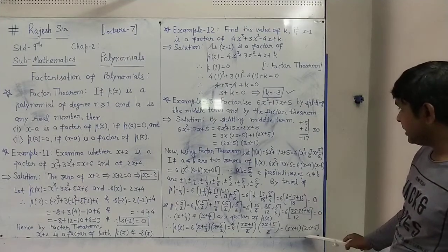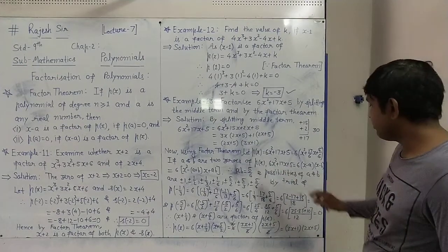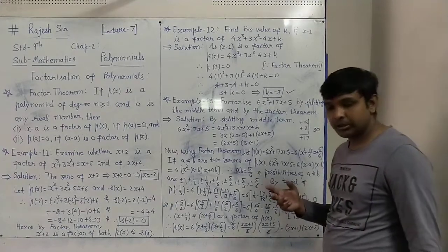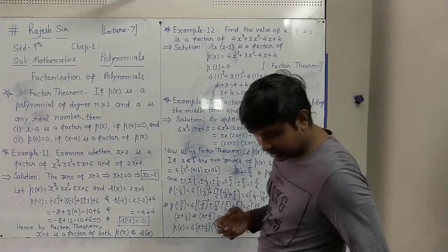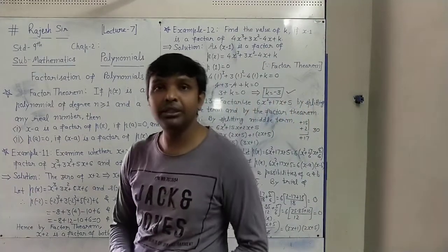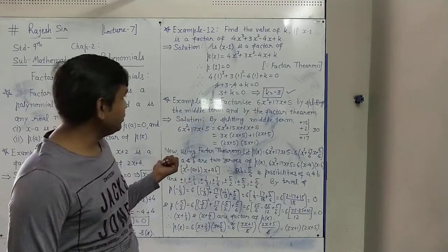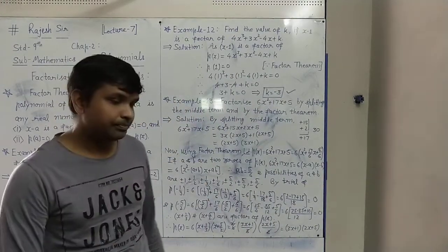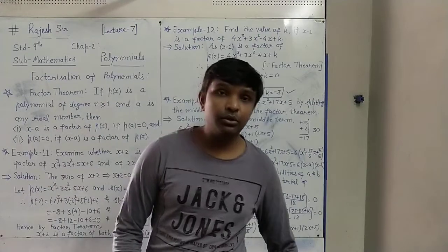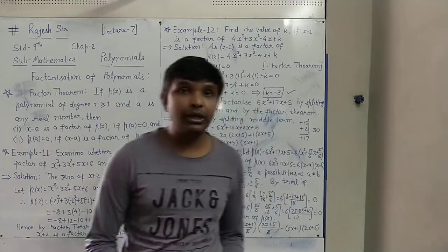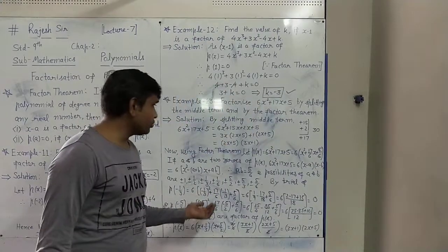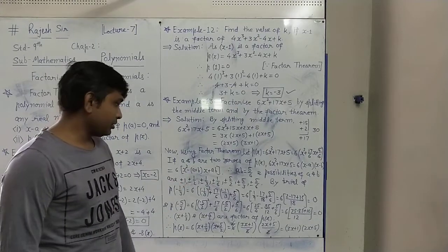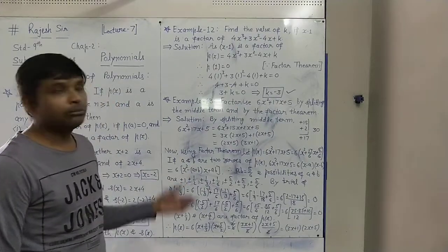You can see that by the splitting method also the same factors were obtained. So these are two methods: splitting the middle term, which we know from earlier classes, and this new Factor Theorem method. In exams, it can be asked, so you have to be careful how to use the Factor Theorem to find the factors of a given polynomial.